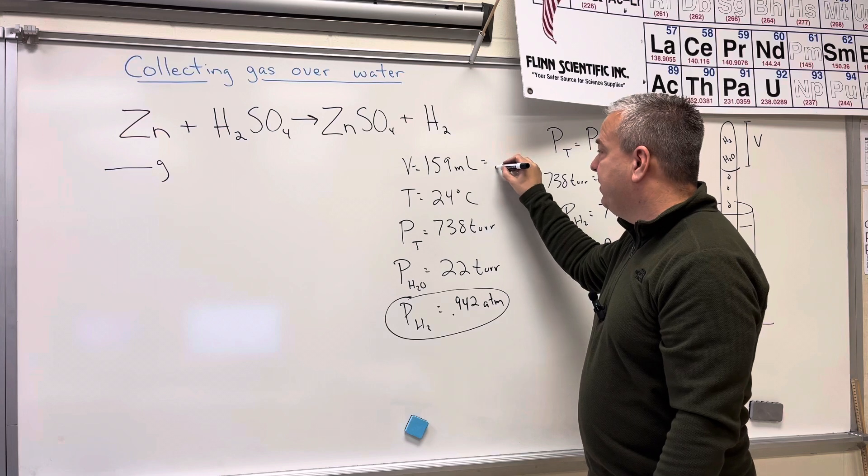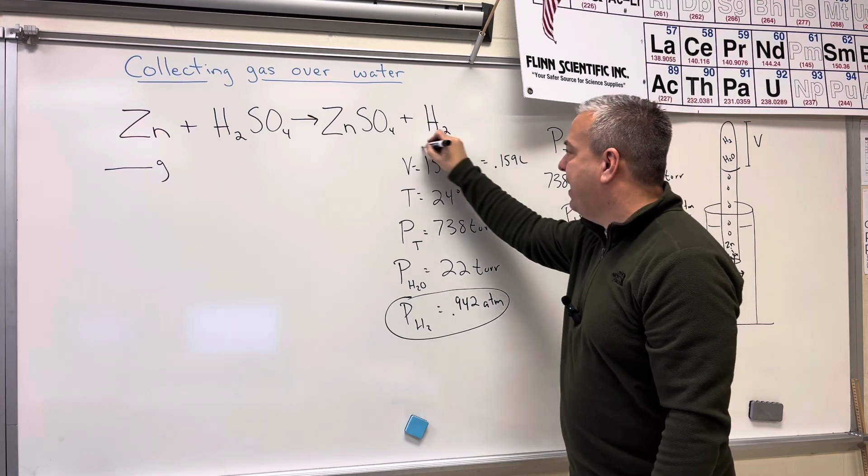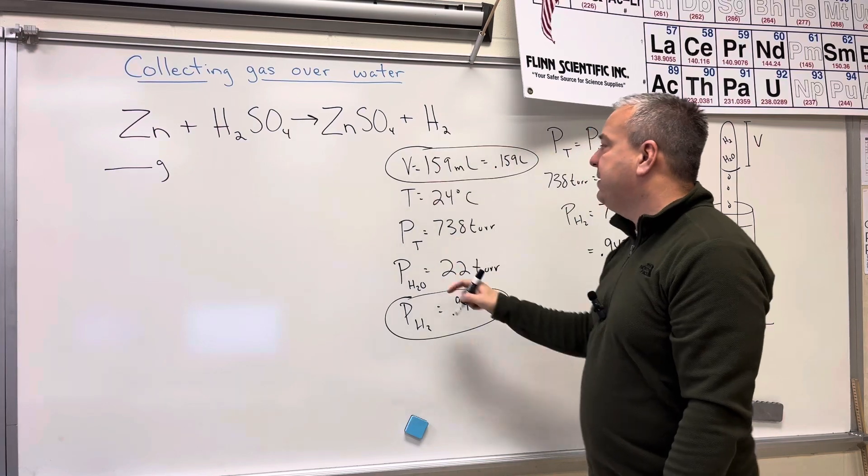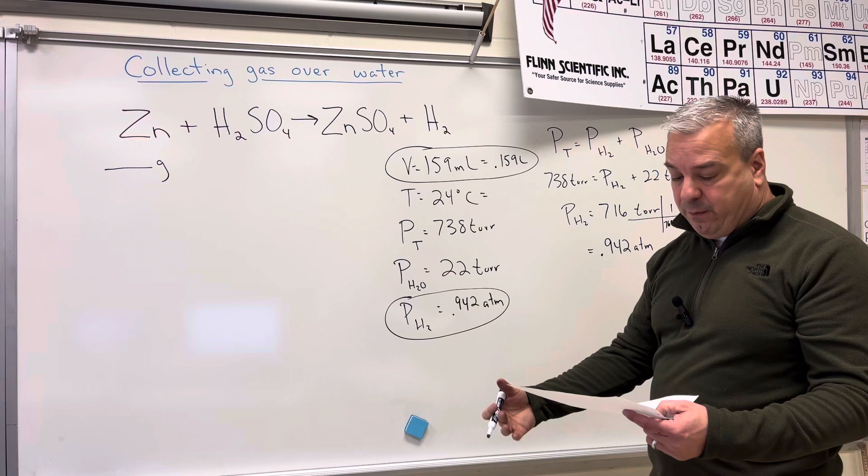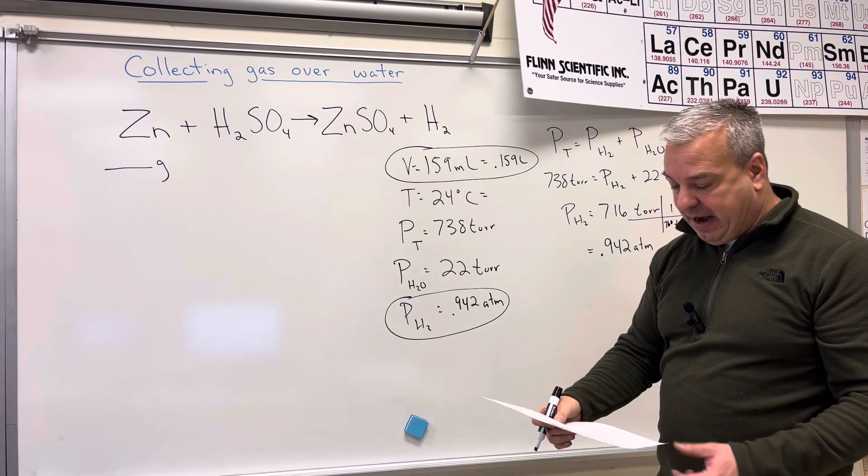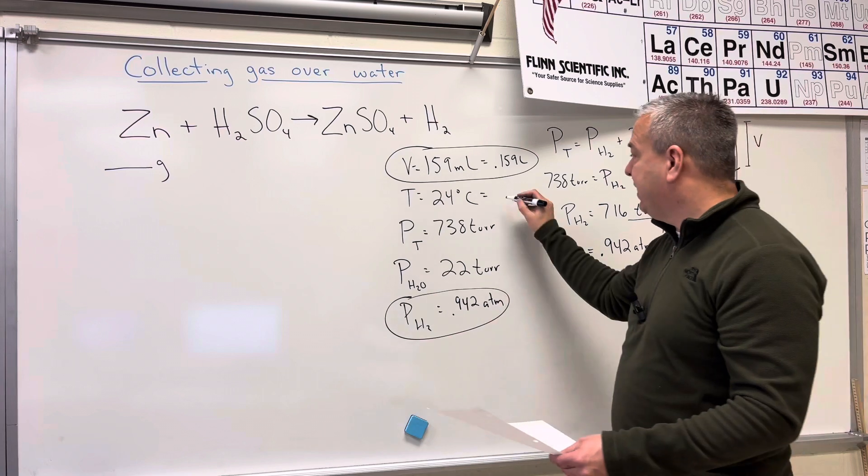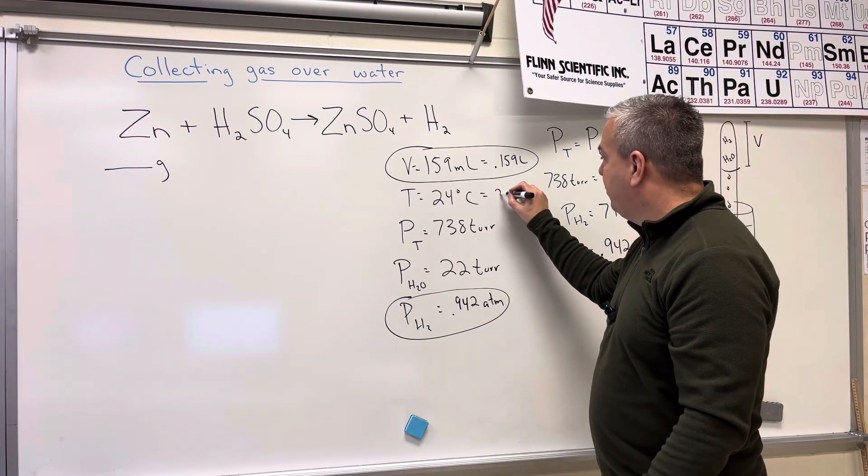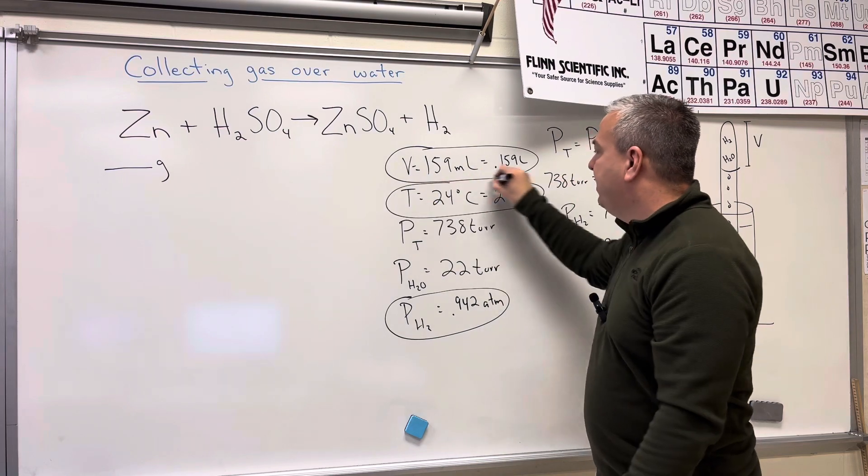This piece has to be in liters, 0.159 liters. So I divided by 1,000. So I like this piece. And this has to be in Kelvin. So 24 degrees Celsius, if I add 273 degrees to get this into Kelvin, that's going to come out to 297 Kelvin. And I like this piece.